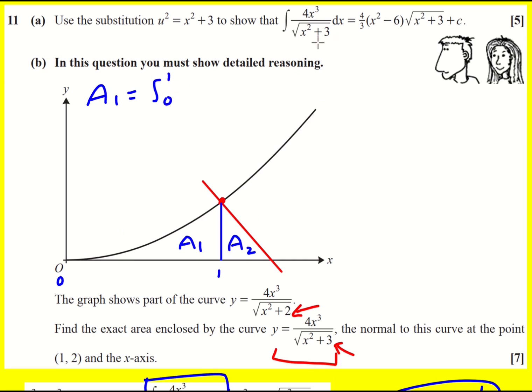And we've already put it back in terms of x. Sometimes when you do a substitution you then substitute in for u, but we've put it back in terms of x here. So 4x cubed over... Remember, we're asked to show detailed reasoning, you can't just stick that in your calculator, but we don't need to because we have the result from part a. It's going to be 4 over 3 x squared minus 6 times the square root of x squared plus 3. Ignore the c.